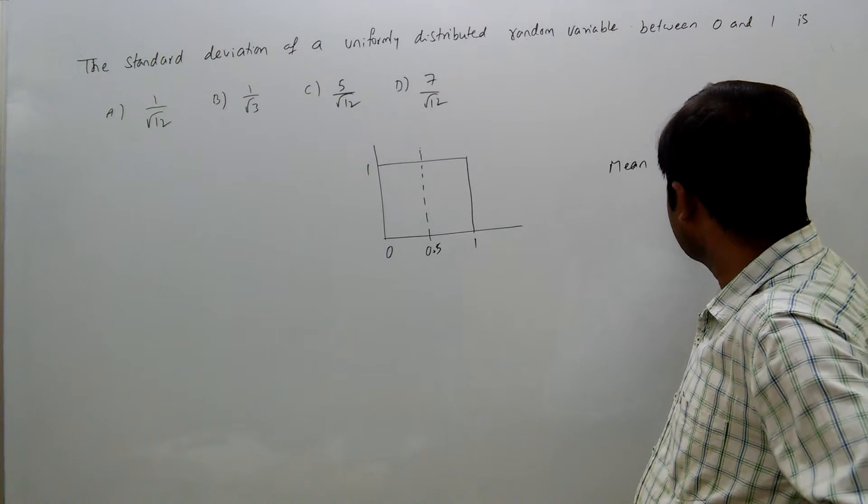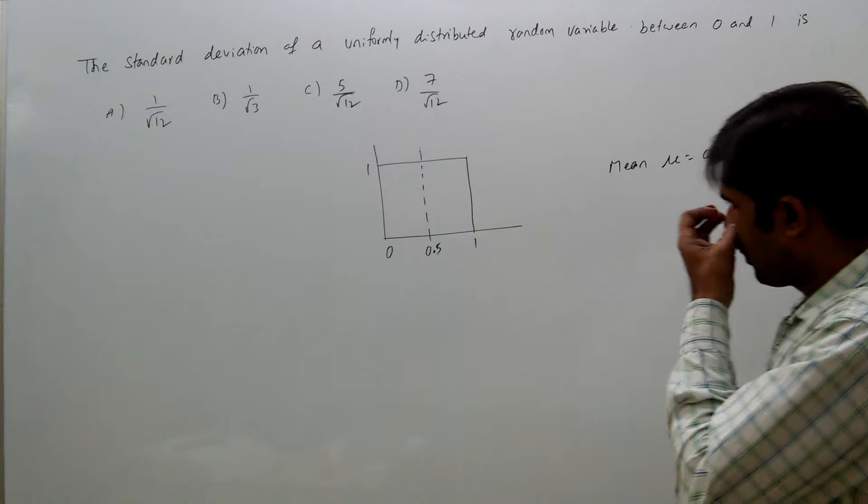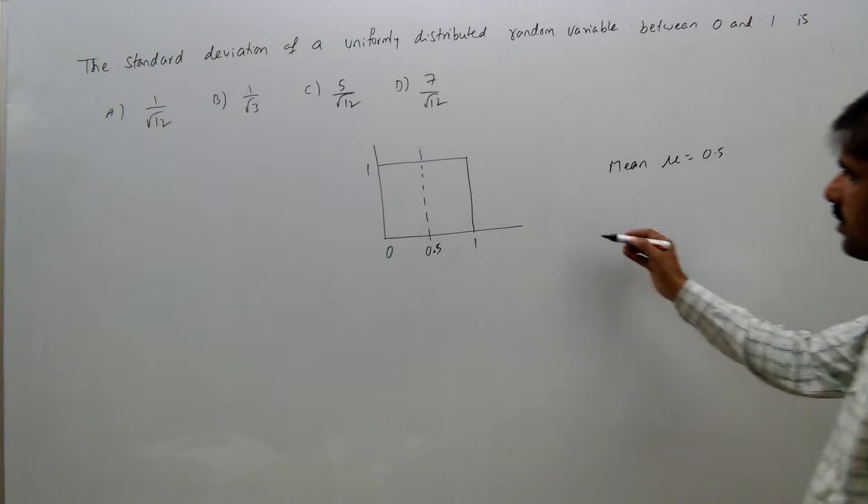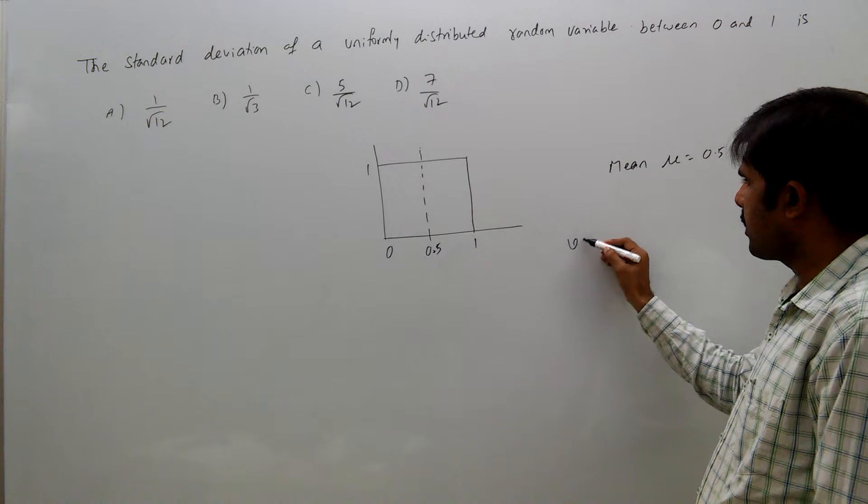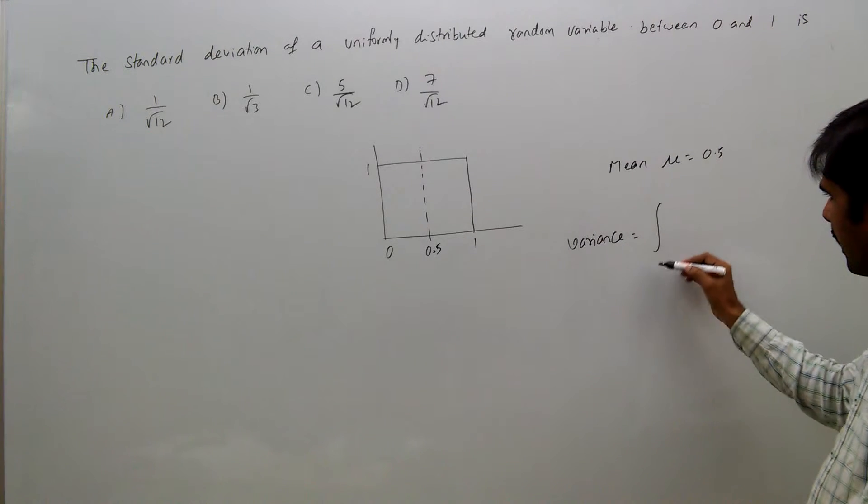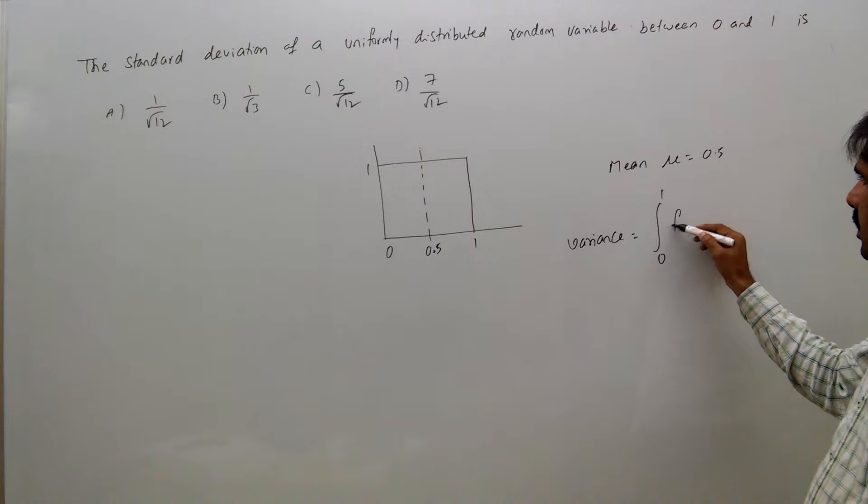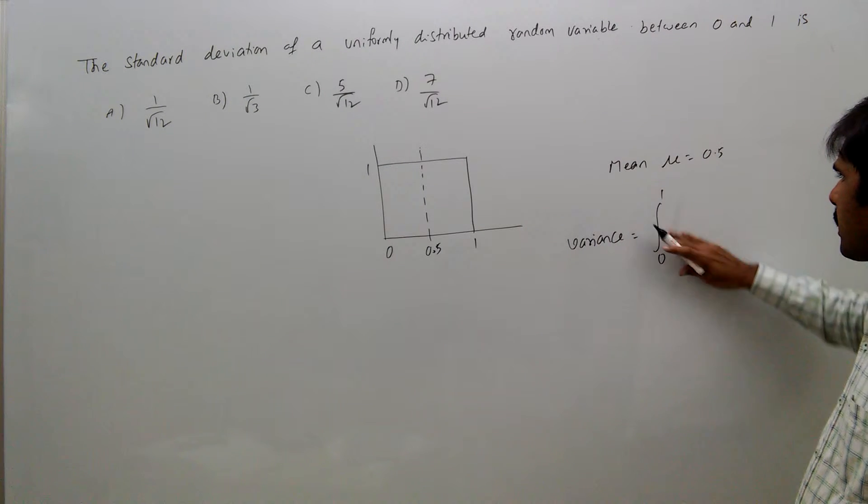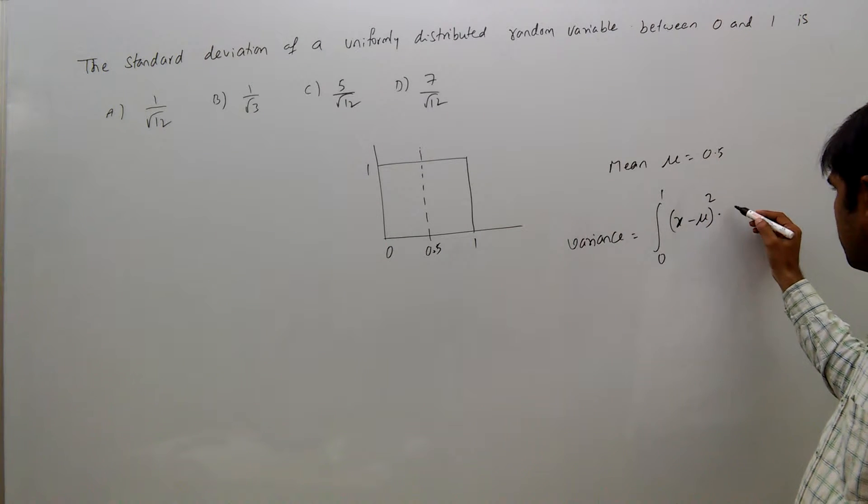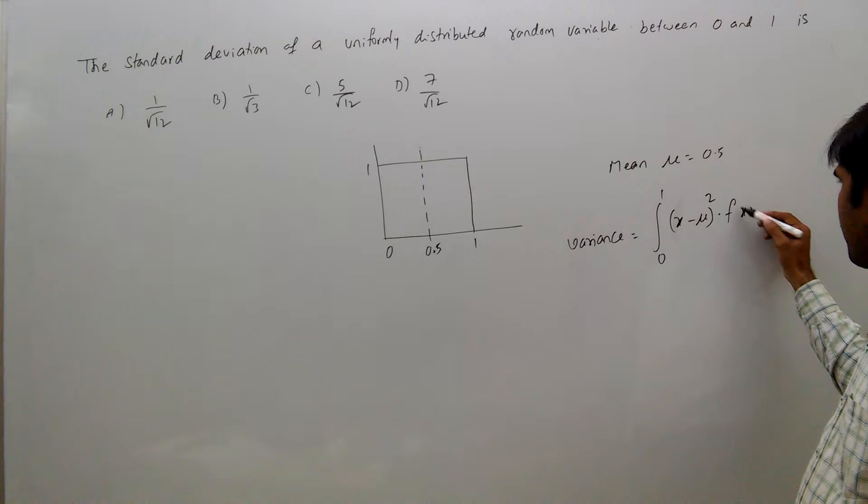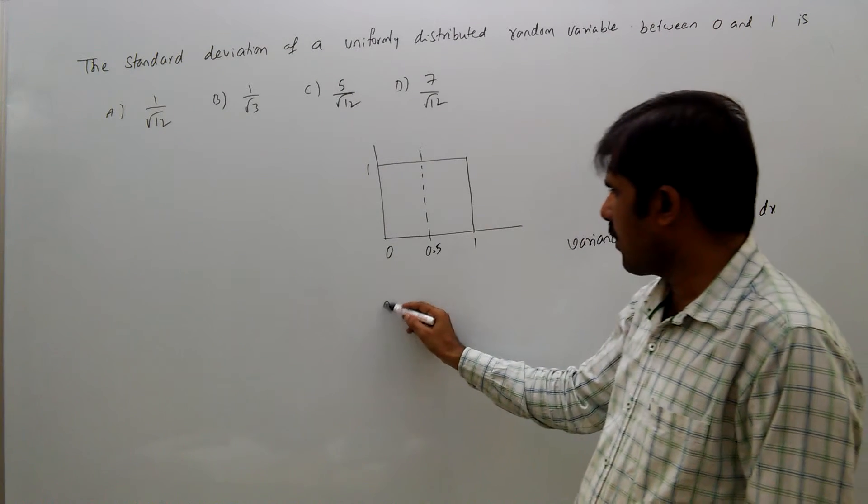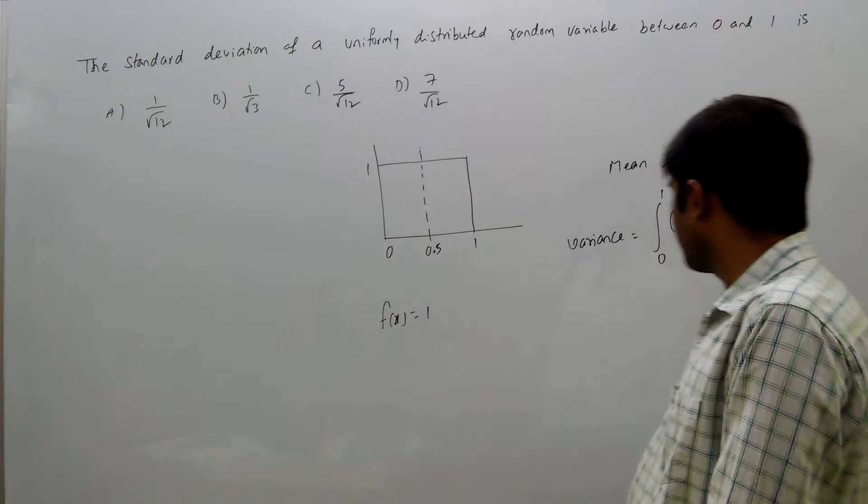Now, for standard deviation, we first need variance. Variance equals the integral from 0 to 1 of (x - μ)² times f(x) dx. Here we know f(x) = 1.